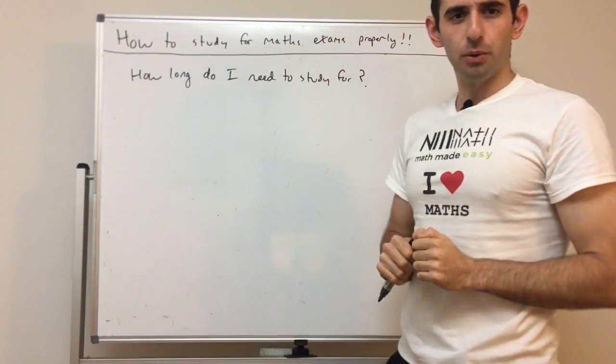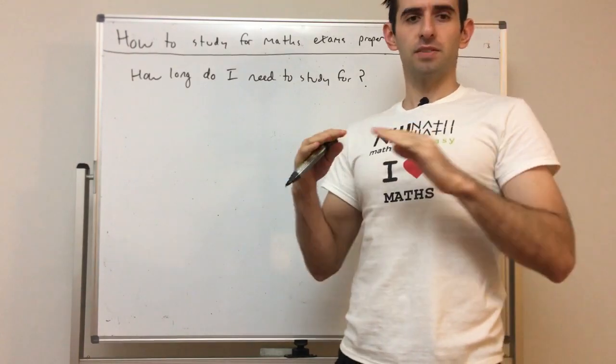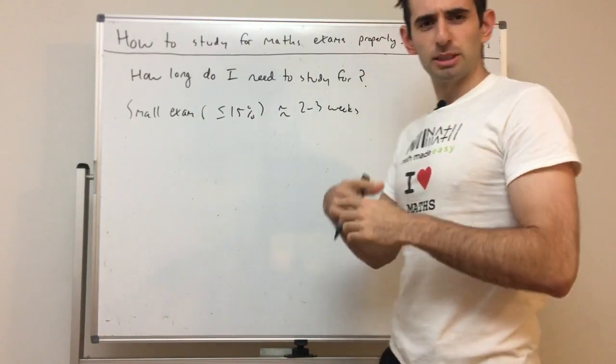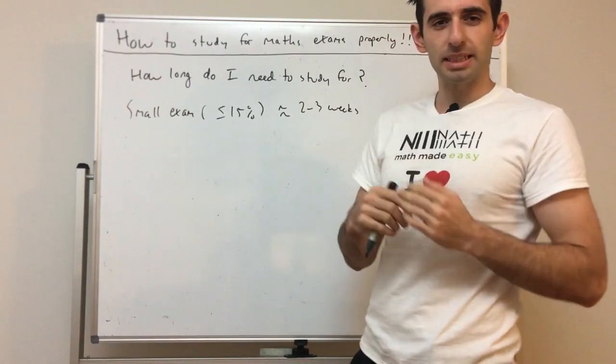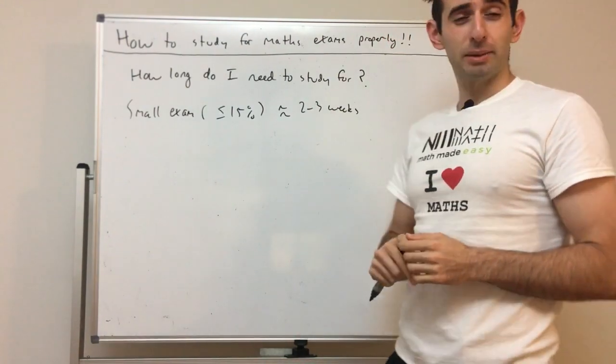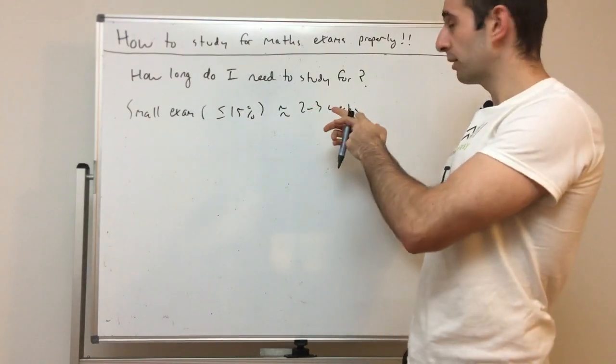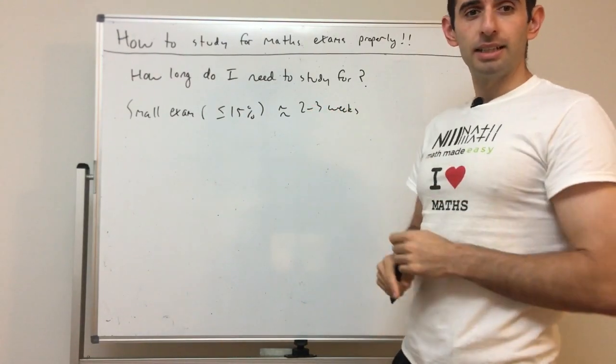How long do you need to study for? It depends on the size of an exam. A small exam is worth under 15%, like 5 or 10%. We're going to need about two to three weeks. That's a minimum. All these numbers here will be minimums. Next, a medium exam, something like 15 to 30 percent, means we're going to want approximately three to four weeks at least.